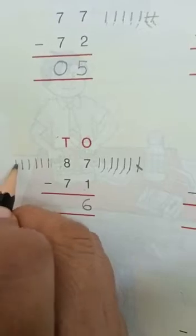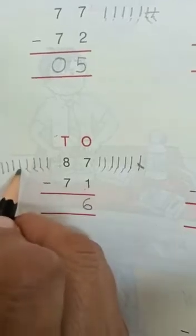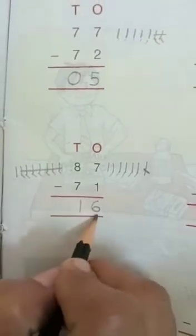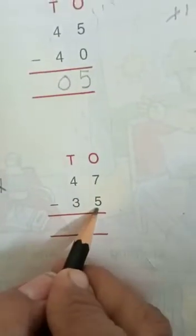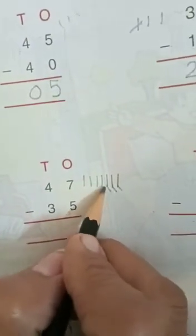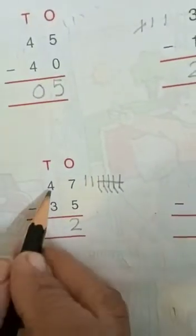Now eight minus seven: one, two, three, four, five, six, seven, eight — minus seven: one, two, three, four, five, six, seven. How many lines are left? One. Four tens: one, two, three, four; take away three tens: one, two, three. How many tens are left? One.